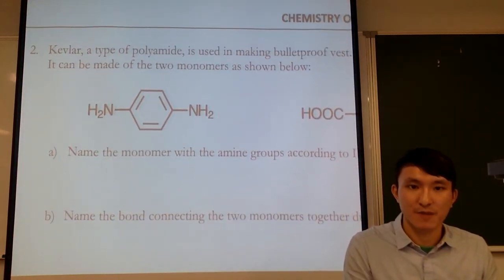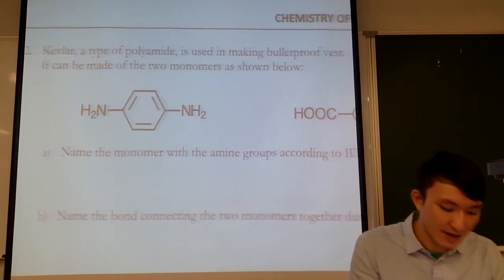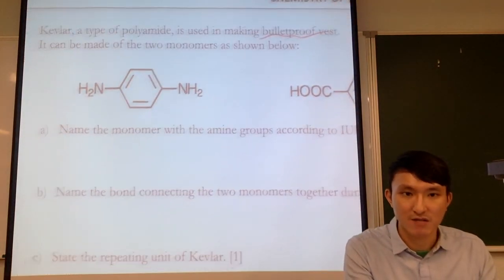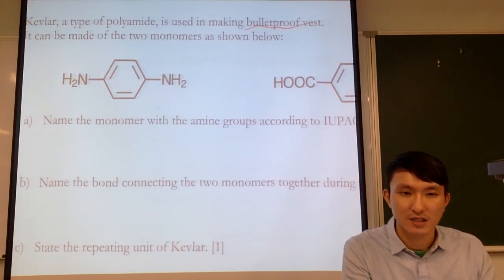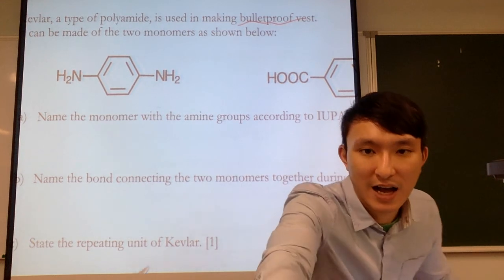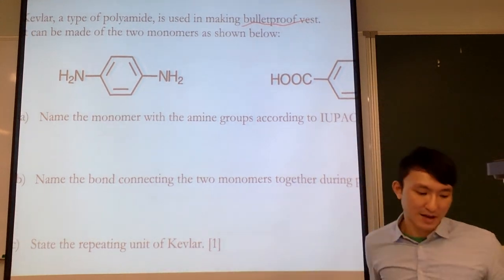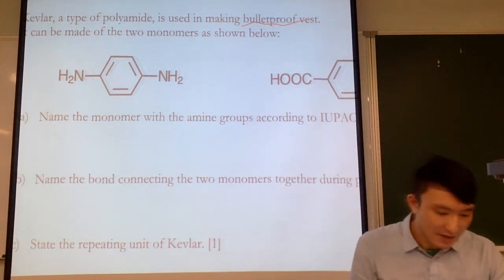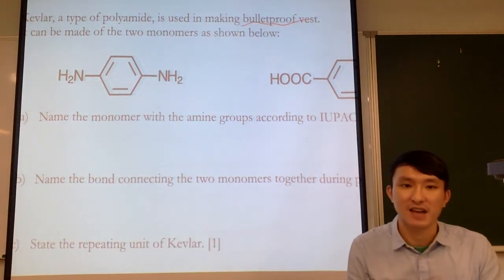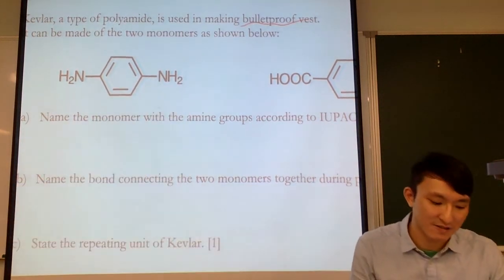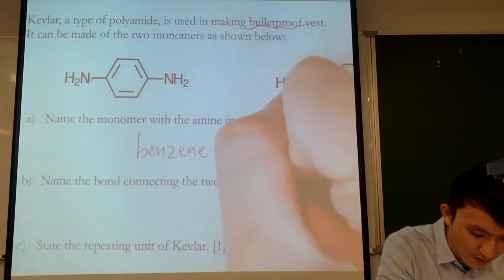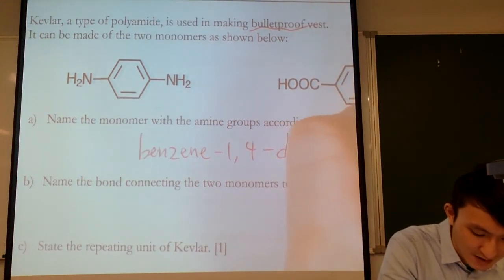Next question: Kevlar is a type of polyamide used for bulletproof vests. Name the monomer with the amine group according to IUPAC nomenclature. Since it has a benzene ring with amine groups, we name it benzene-1,4-diamine — with amine groups at positions 1 and 4.